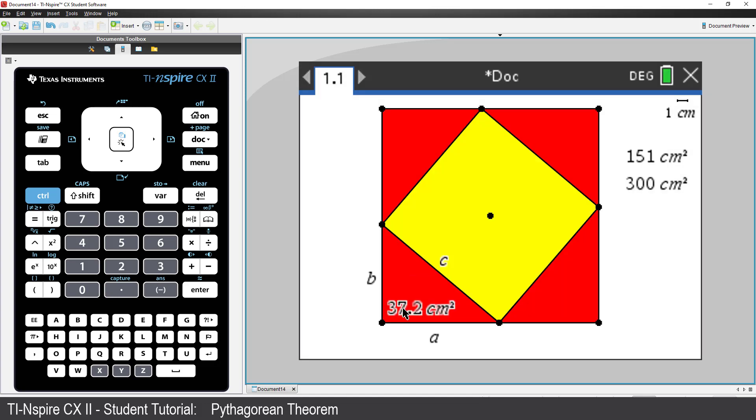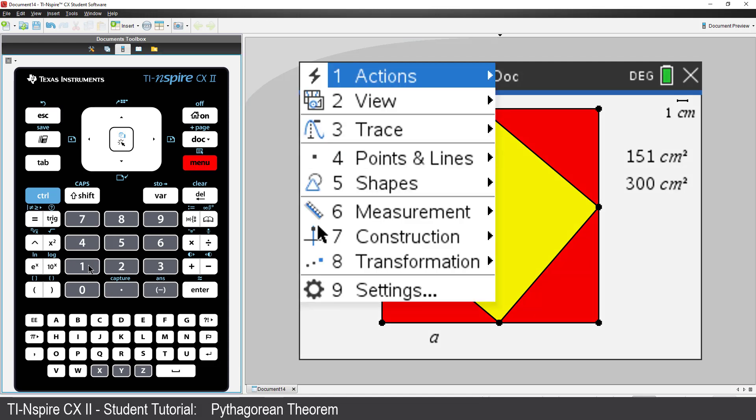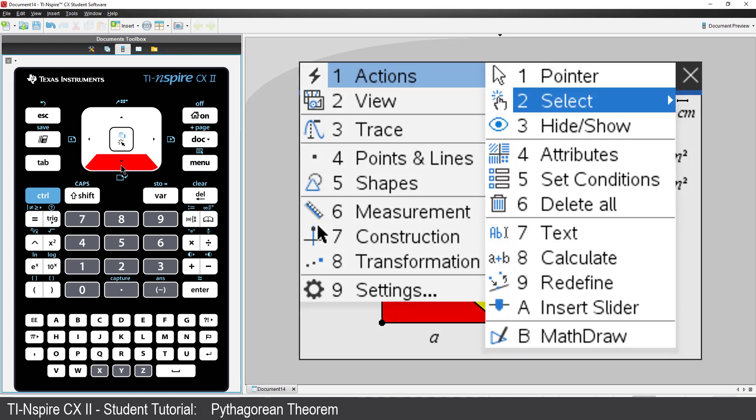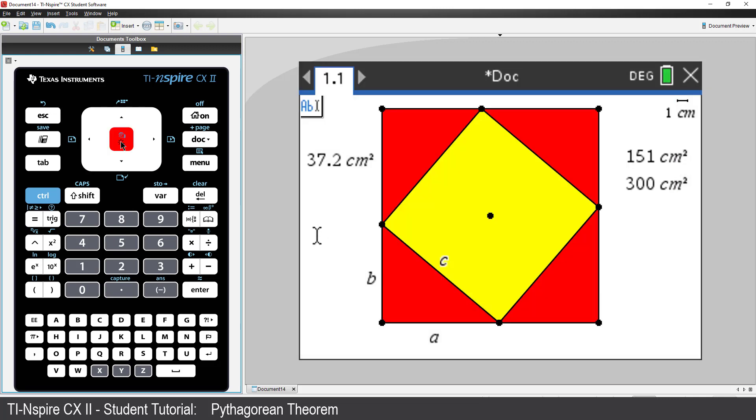Rather than measure all four triangles, I'll create some text. Press Menu, select Actions, and then Text, and just click below the triangle area measurement. Type in 4 times TA for triangle area, then press Enter.